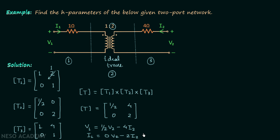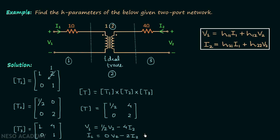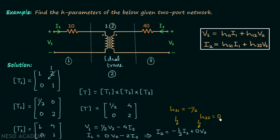Recalling the standard H parameter equations, we can extract results from the second equation: I2 = −(1/2)·I1 + 0·V2. This means H21 = −1/2 and H22 = 0. The calculation of parameters H11 and H12 is left as homework.